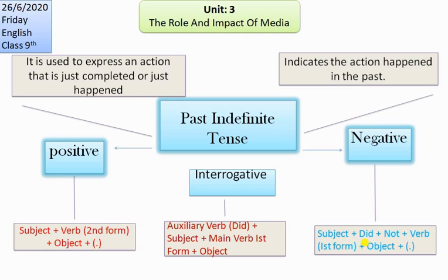For negative sentences, the rule is: subject plus 'did not' plus the first form of the verb plus object. For example, 'I did not harm your pet dog.' Here 'I' is the subject, 'did not' is the auxiliary, 'harm' is the first form of the verb, and 'your pet dog' is the object.